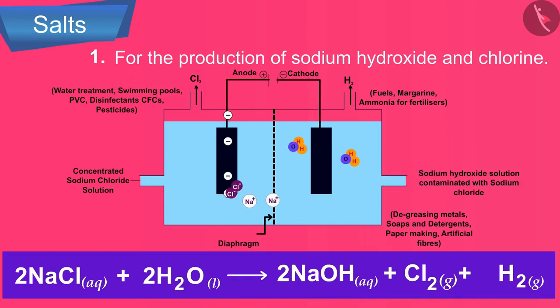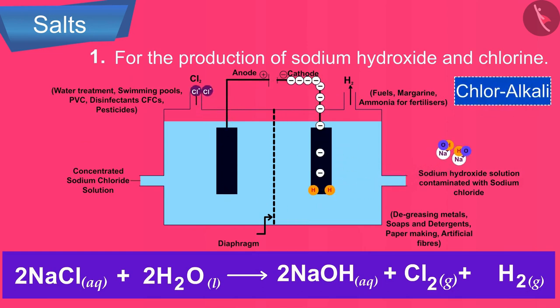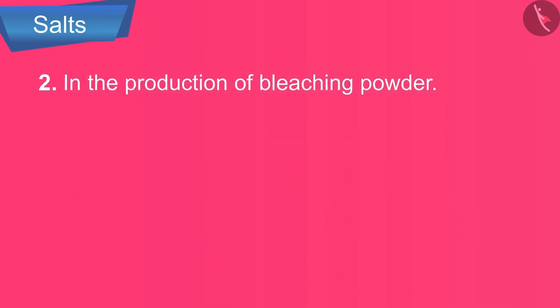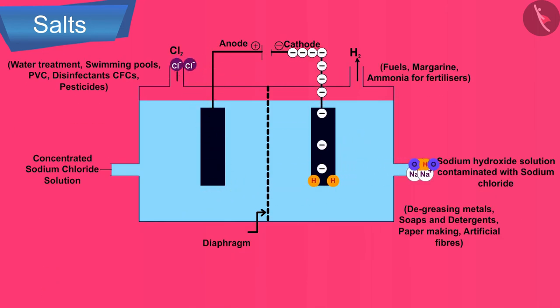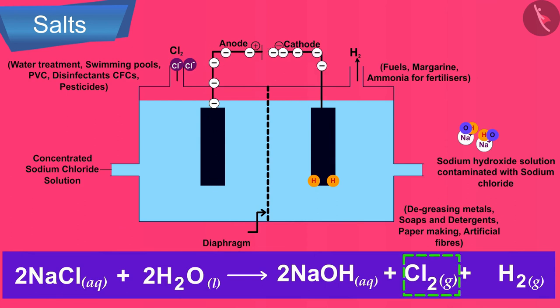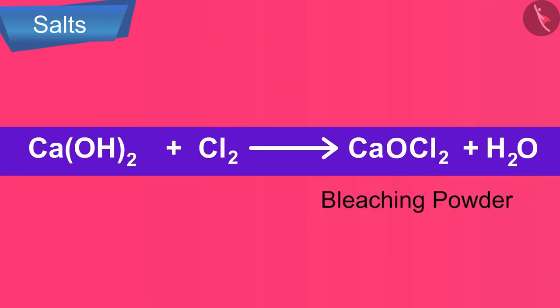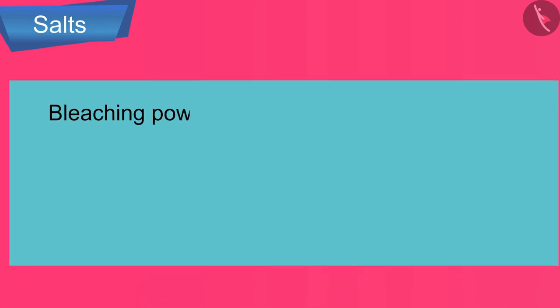The various uses of the three products resulting from this process are shown here. This process is called the chloralkali process. Two: in the production of bleaching powder, the electrolytic decomposition of sodium chloride produces chlorine gas, which is used in the production of bleaching powder.